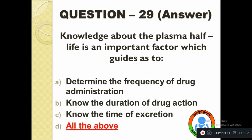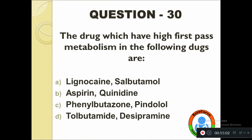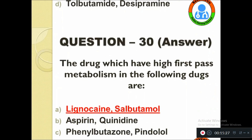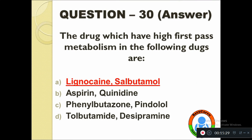Question number thirty: The drugs which have high first-pass metabolism are — option A: Lignocaine and Salbutamol, B: Aspirin and Ranitidine, C: Phenylbutazone and Pindolol, D: Tolbutamide and Desipramine. The correct answer is Lignocaine and Salbutamol.